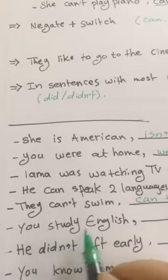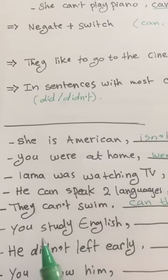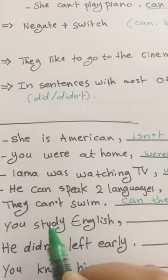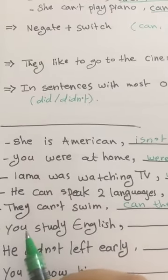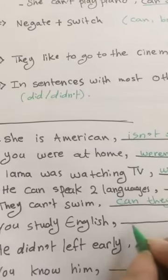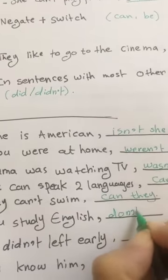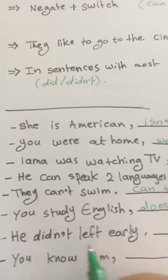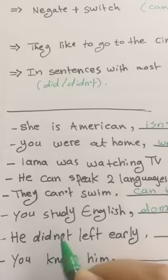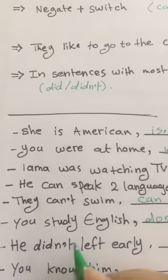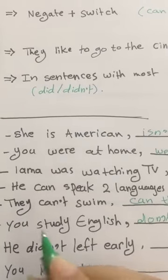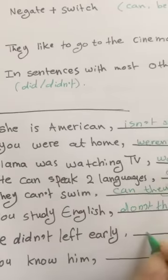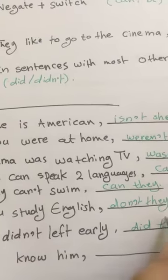You study English. We don't have a helping verb here. You study, so present simple. So either do or don't. Since this is affirmative, it will be negative. So don't you? The next one: He didn't leave early, did he? There's a helping verb so we switch, then we negate. If it was negative we make it affirmative. So did he?